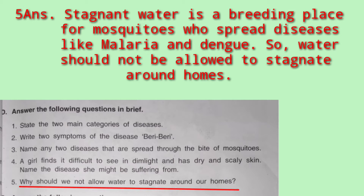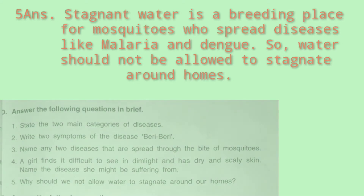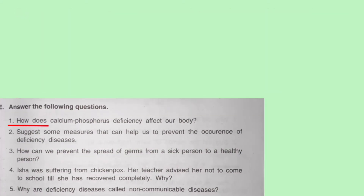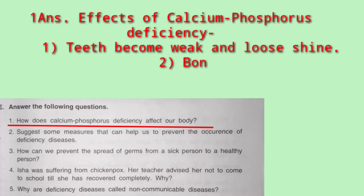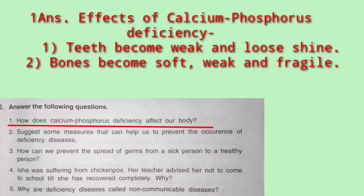Question six: how does calcium and phosphorus deficiency affect our body? If there is a lack of calcium and phosphorus in our body, our teeth become weak and lose their shine or whiteness, and our bones become weak, soft, and fragile.